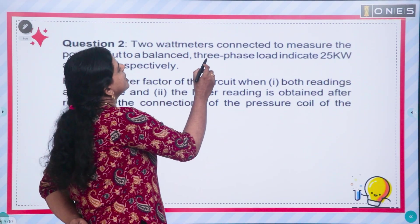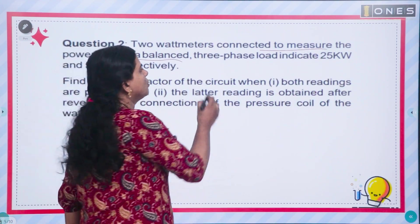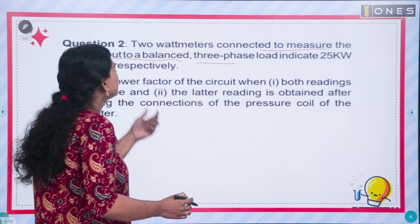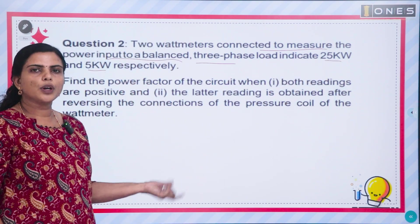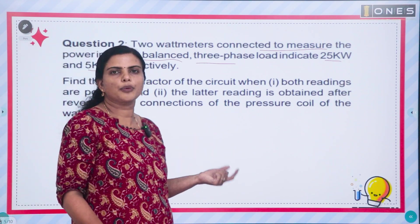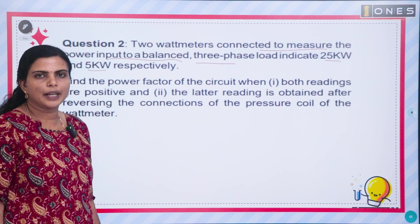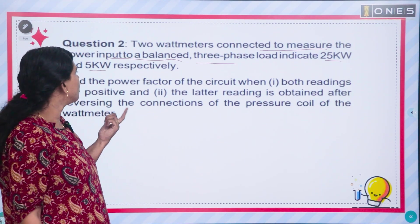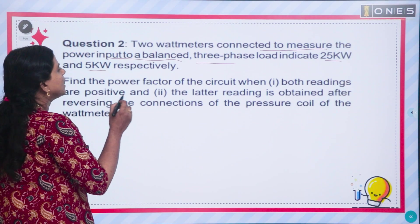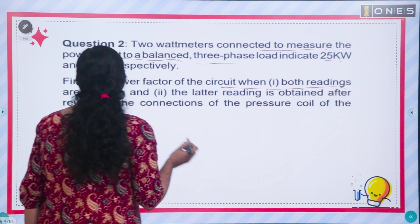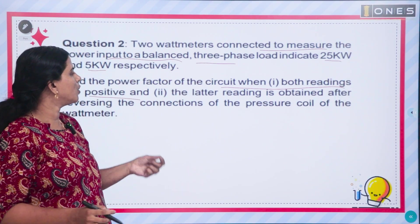Problem 2: Two wattmeters connected to measure the power input to a balanced three-phase load indicate 25 kilowatts and 5 kilowatts. So W1 is 25 kilowatts and W2 is 5 kilowatts. Find the power factor. Note that the second reading is obtained after reversing the connection of the pressure coil of the wattmeter.